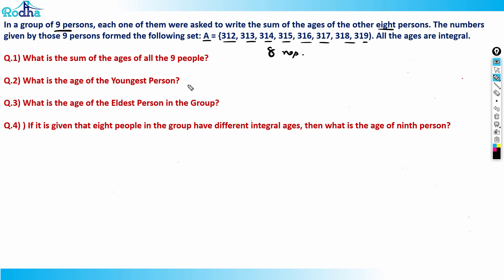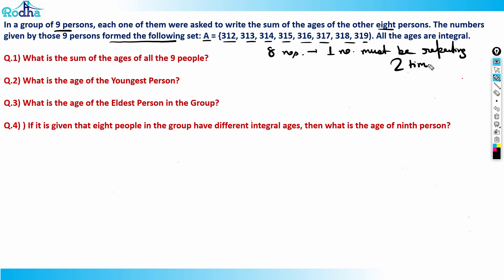If you observe, there are only eight numbers here. But nine persons each wrote a number, so there should be nine data points. Since the set has only eight numbers, that means one number must be repeating twice. The problem doesn't say any data is missing, so one number must be repeated — that's the key insight.